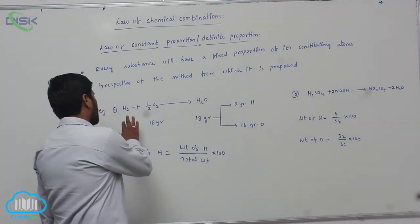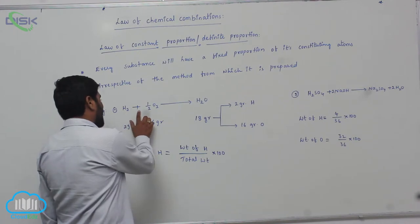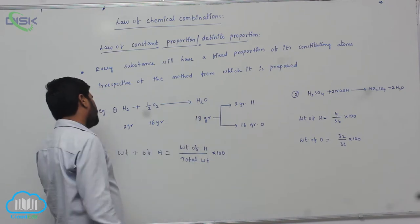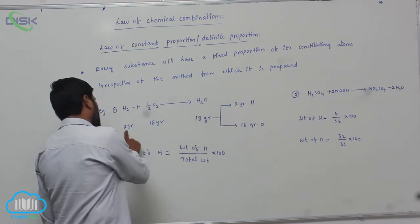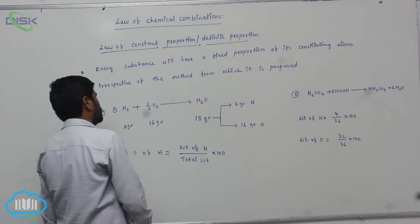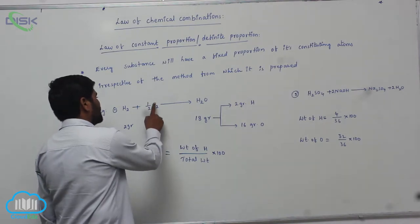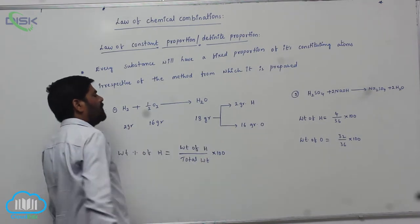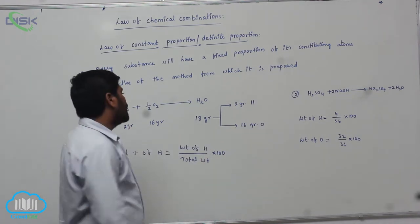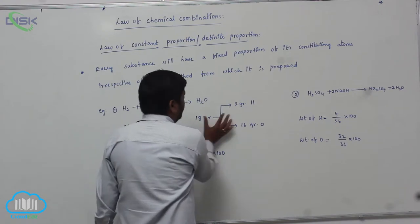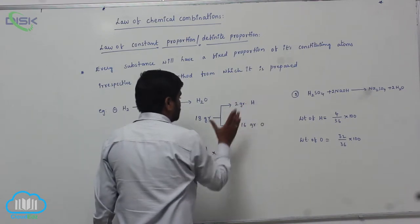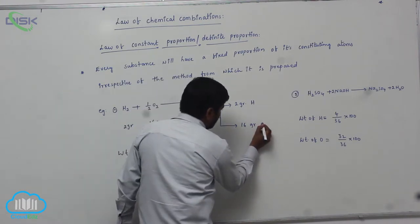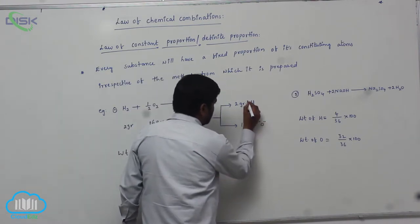For example, H2 molecule combined with oxygen to form H2O. Here is 2 grams of hydrogen, 16 grams because half mole of H2O we are taking here, so therefore 18 grams of water is formed. In this 18 grams of water, 2 grams of hydrogen, then 16 grams of oxygen atom is present.